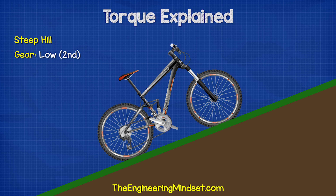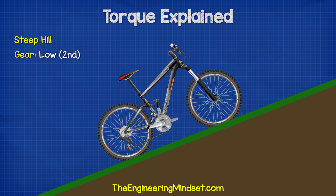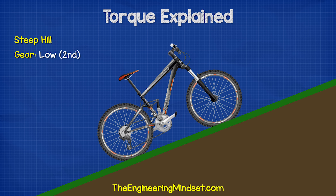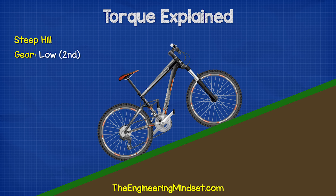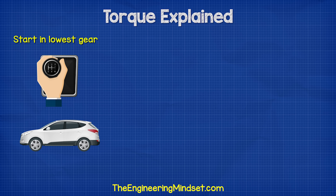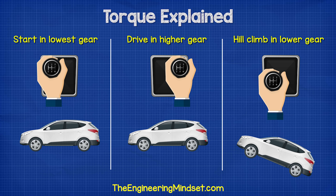Once we reach a steep hill, we need to move to a lower gear. The same with a car — we start in our lowest gear and work our way up as the vehicle increases in speed, then change down as we drive up a hill.